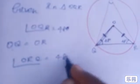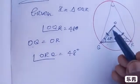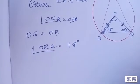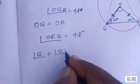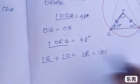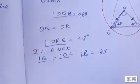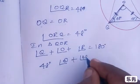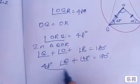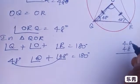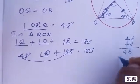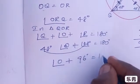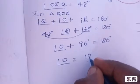In triangle OQR, the sum of all angles is 180 degrees. So angle Q plus angle O plus angle R equals 180 degrees. Substituting: 48 degrees plus angle O plus 48 degrees equals 180 degrees, giving us 96 degrees plus angle O equals 180 degrees.